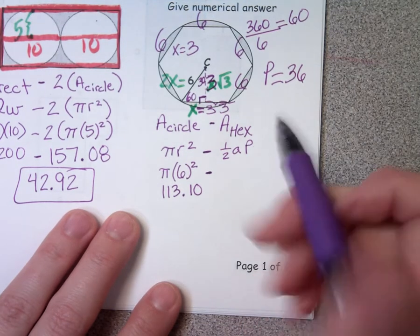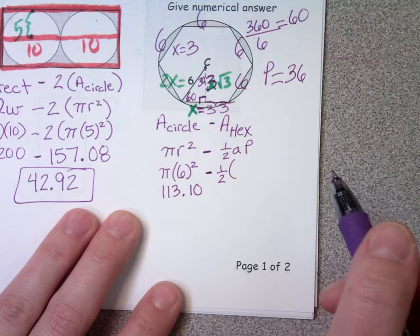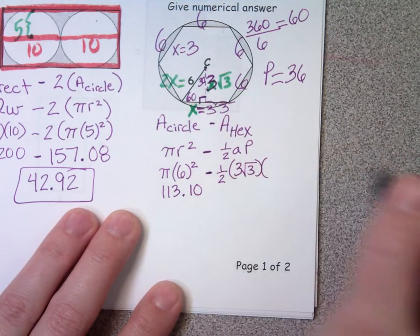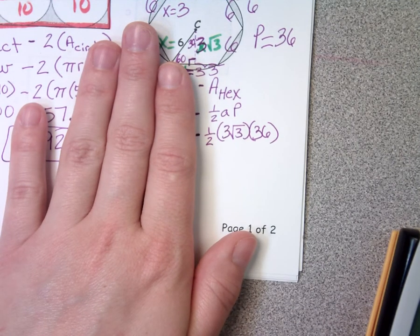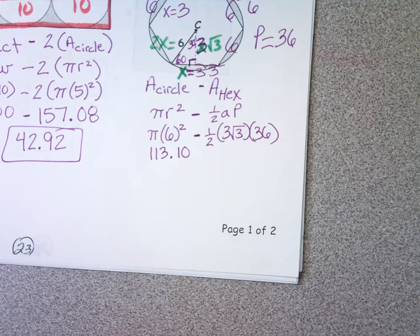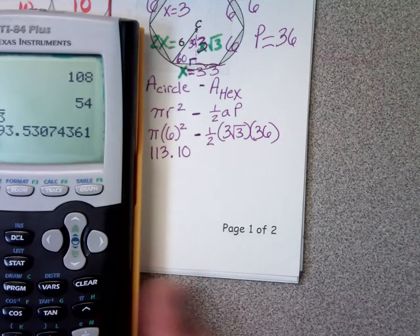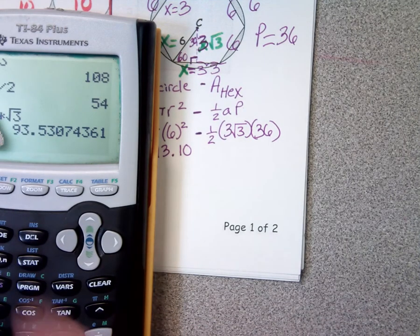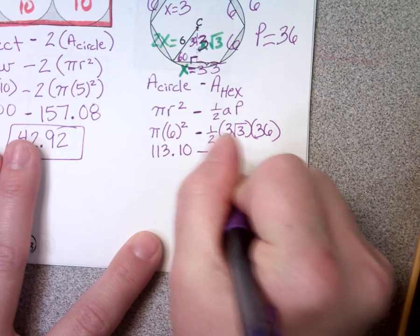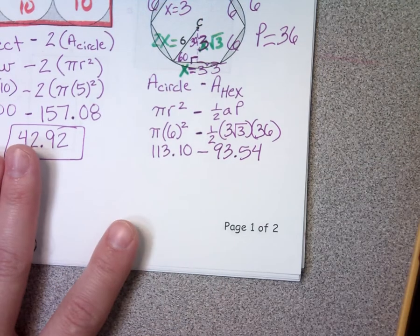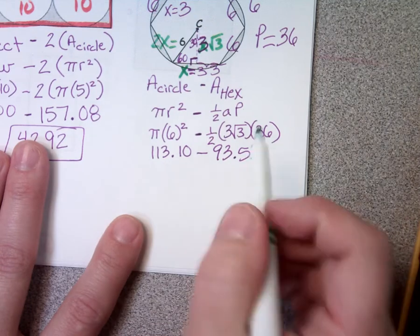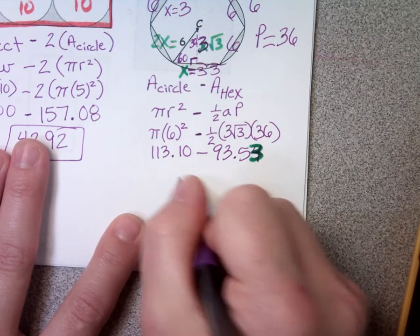Now I know everything I need to find the area of my hexagon. I take one-half times the apothem — three square root of three — times the perimeter, which is thirty-six. Round to the nearest hundredth. Is that what everybody got? Ninety-three point fifty-three. So, minus ninety-three point fifty-three. What do we get if we subtract 113.10 minus 93.53? Nineteen point fifty-seven.